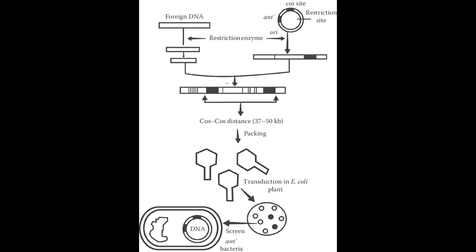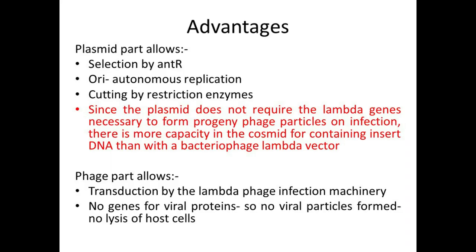These vectors can be packaged inside empty coats of phages and allowed to enter host cells by transduction. Once inside the host cell, the cos sequences allow them to undergo circularization. The advantages are: natural phage DNA has no antibiotic resistance gene, but the plasmid part provides one to act as a marker; it also has the ORI of a plasmid so it can behave like a plasmid inside the host cell.